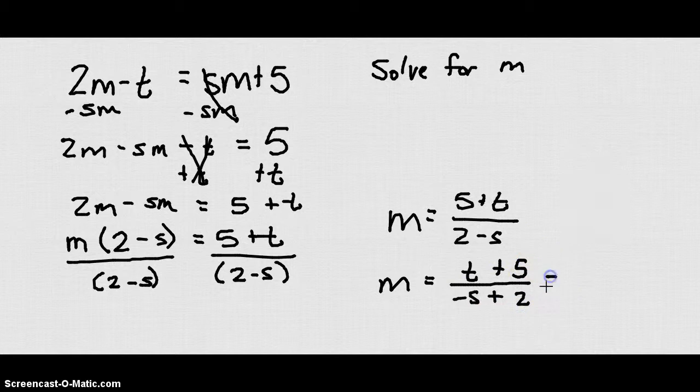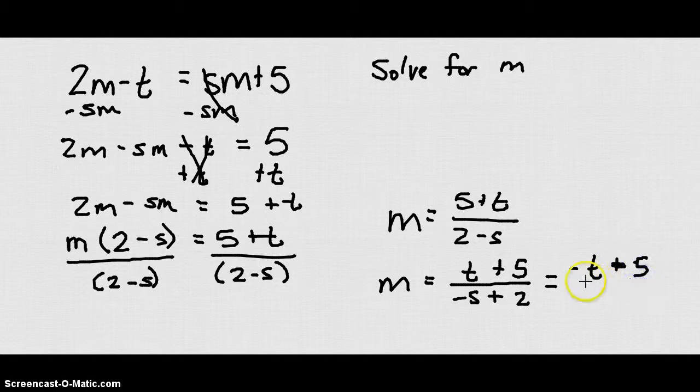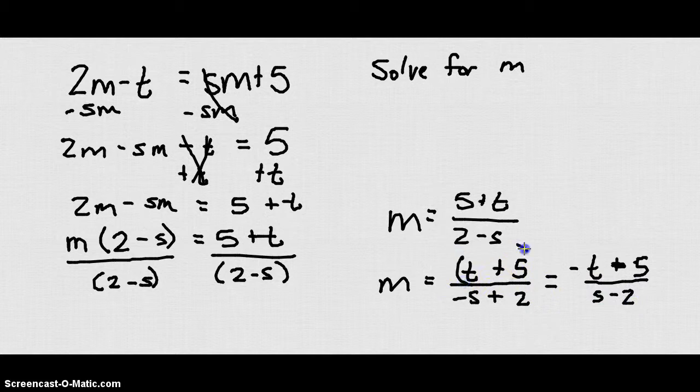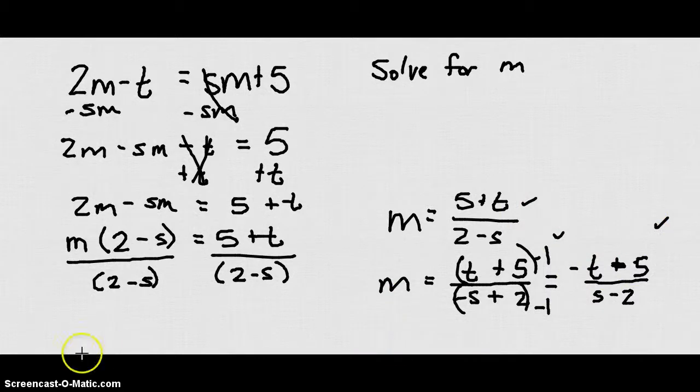Another way we can write that is m equals t plus 5 over negative s plus 2. You could also write that as negative t minus 5 over s minus 2. If I take these by negative 1, any of those answers is going to be the correct way to solve for m.